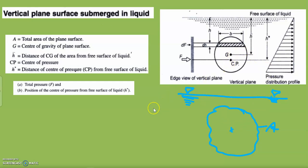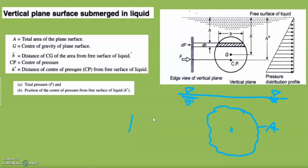For a rectangle of shape B by Y, the center of gravity will be exactly in the middle — at B/2 and Y/2. In this case, we have a defined surface with a center of gravity, let it be G.